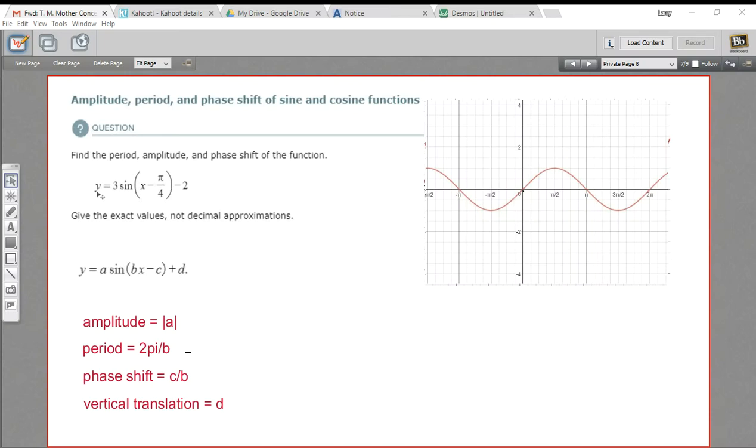In this problem, we have a fairly complicated-looking sine function: y = 3 sin(x - π/4) - 2. We're being asked to give the period, the amplitude, and the phase shift of the function.